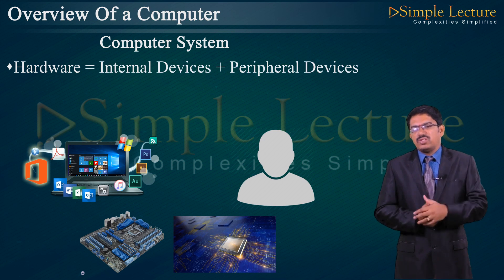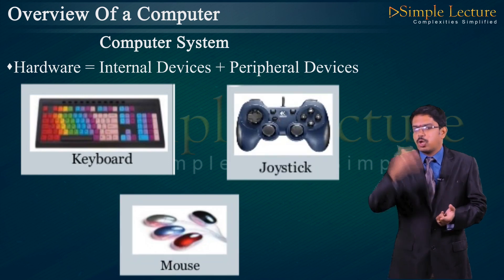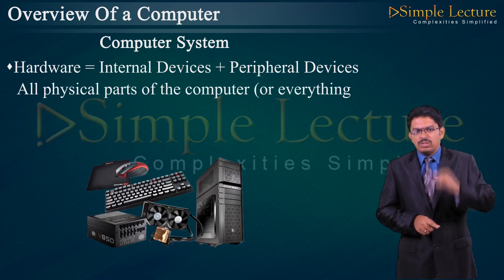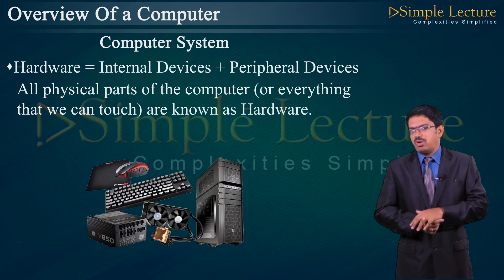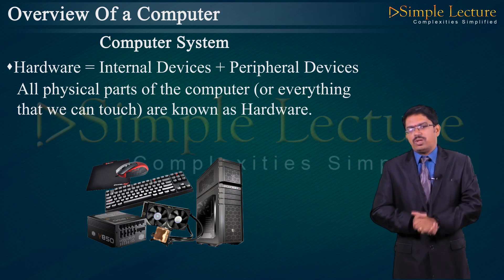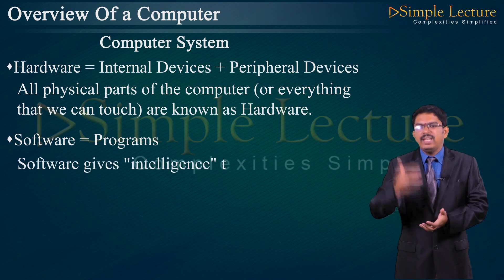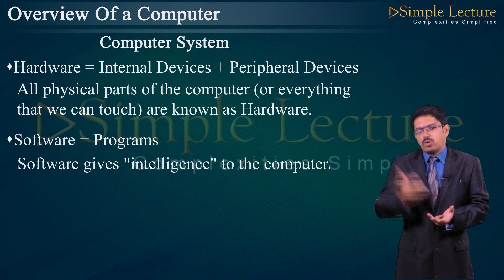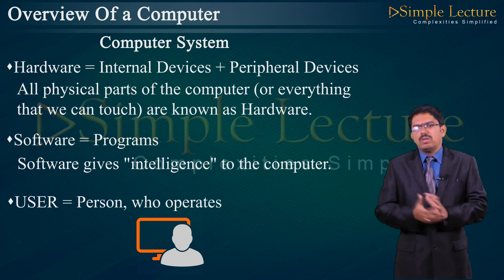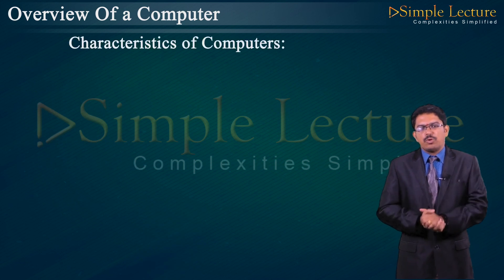Peripheral devices are external devices such as keyboard, mouse, and joystick. All the physical parts of a computer — everything that we can touch — are called hardware. Software gives intelligence to the computer and is a set of programs, for example C, C++, Java. A user is a person who operates the computer.